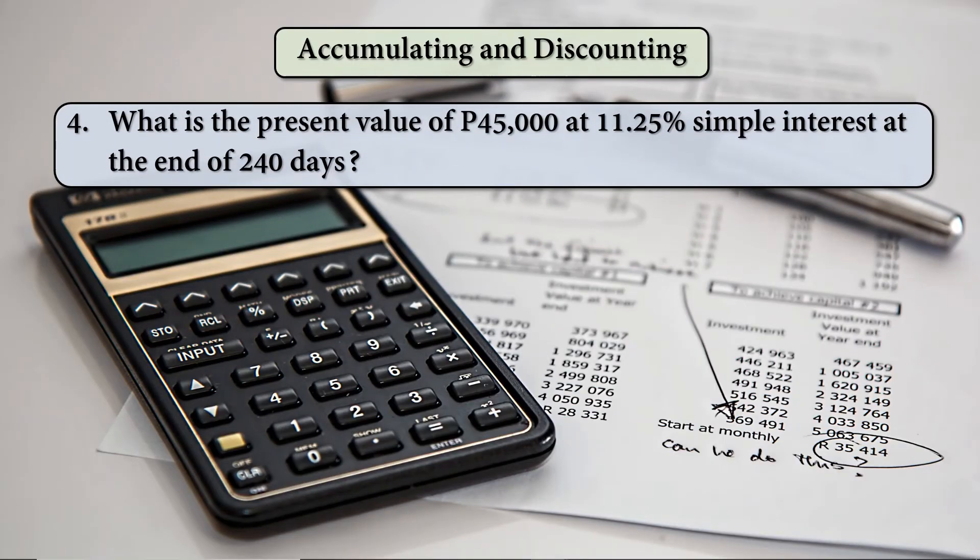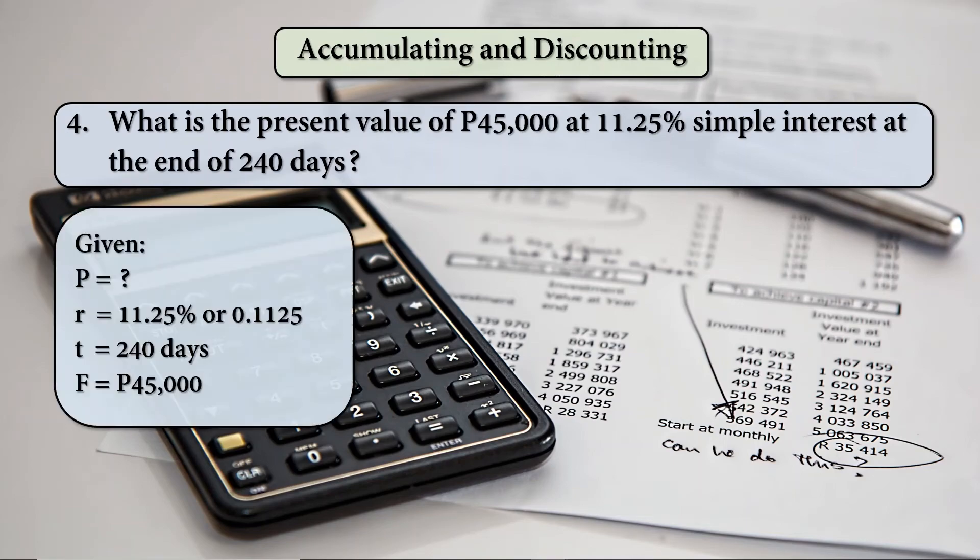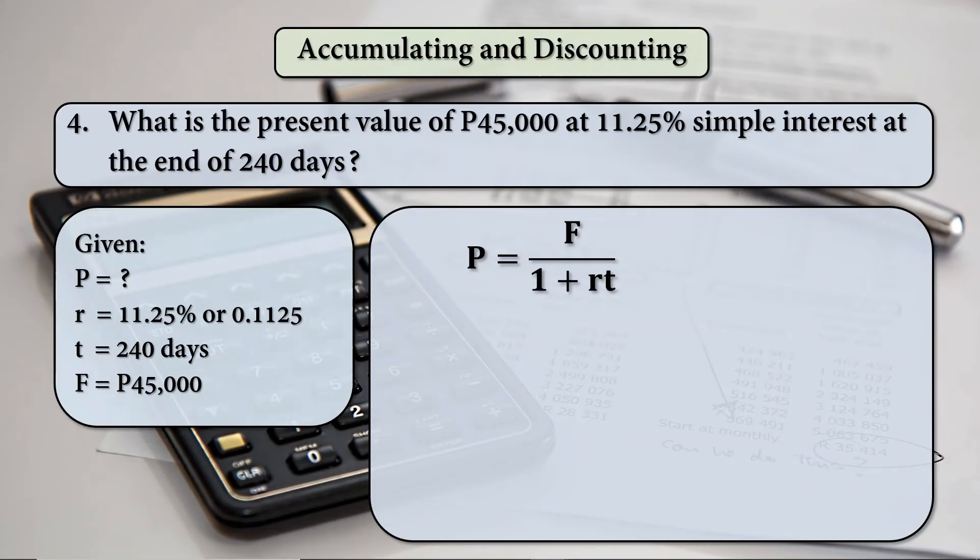For the fourth example: what is the present value of 45,000 pesos at 11.25% simple interest at the end of 240 days? Given the R, T, and F, we have to find the value of P using the same formula: F over 1 plus RT.